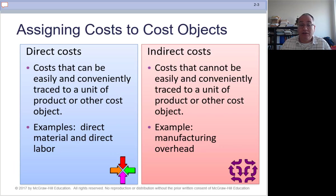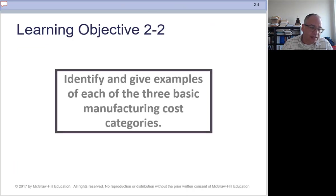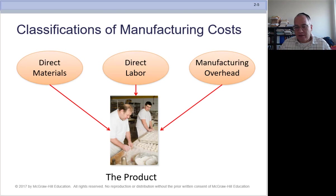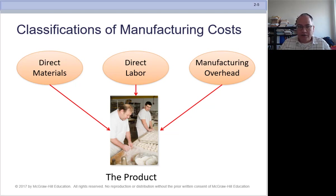So direct costs are direct materials and direct labor. Indirect costs are manufacturing overhead. Direct materials, direct labor, and manufacturing overhead are the three types of costs that go into manufacturing goods.